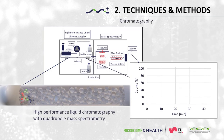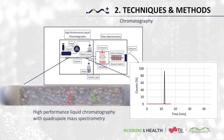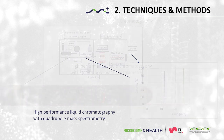As chromatography plays an important role for many steps within omics techniques, we would like to show you the principle of chromatography itself. Basically, chromatography is used to separate a mixture into its components. These components can be peptides or metabolites.